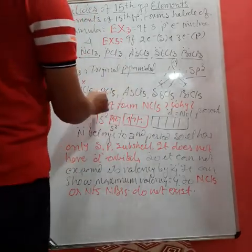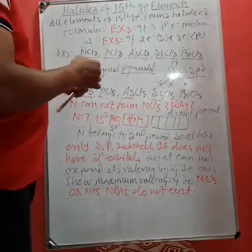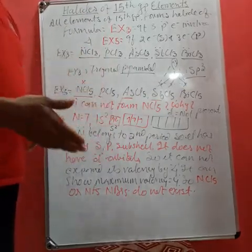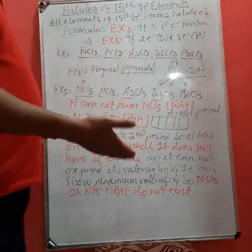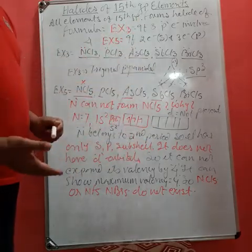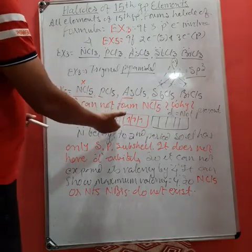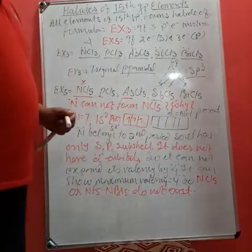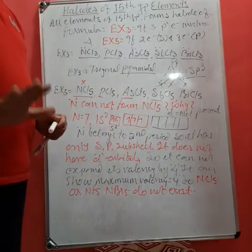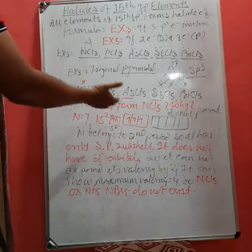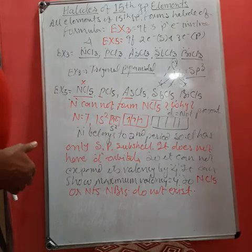While student, rest of the elements like phosphorus, arsenic, antimony, bismuth, they belong to third, fourth, fifth and sixth period. And therefore, they are having 3d, 4d, 5d and 6d orbitals. Here, one of the electrons from 2s subshell can jump. And therefore, now there will be five unpaired electrons. These five unpaired electrons can easily combine covalently with halogen.